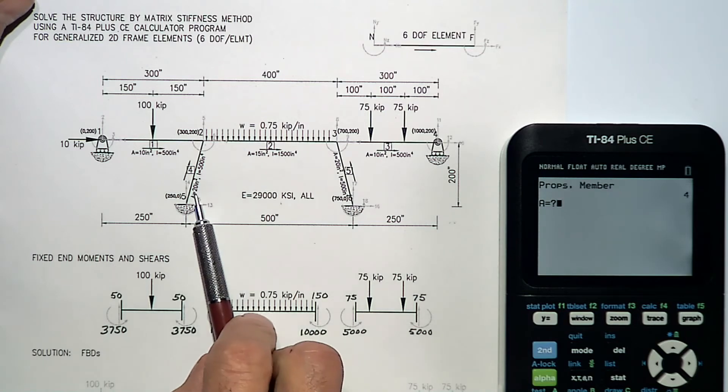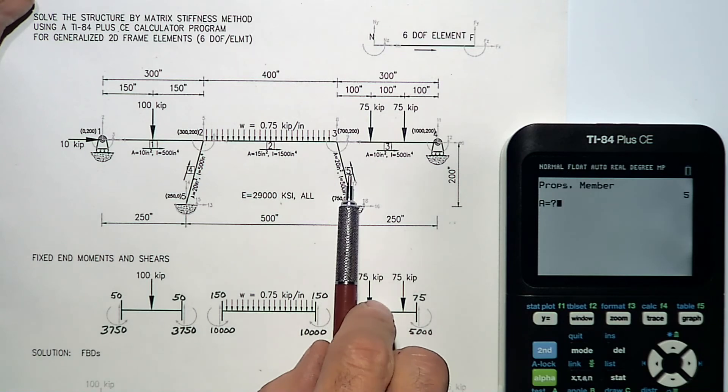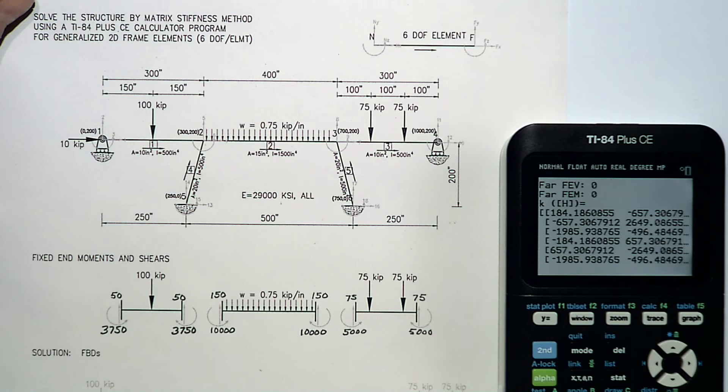Member four has an area of twenty. Modulus of elasticity of twenty-nine thousand. Moment of inertia of five hundred. There are no fixed end shears or moments for that member. There is the member stiffness matrix. Finally, member five has an area of twenty. Twenty-nine thousand modulus. Five hundred moment of inertia. Fixed end shears and moments are zero. There is the member stiffness matrix.